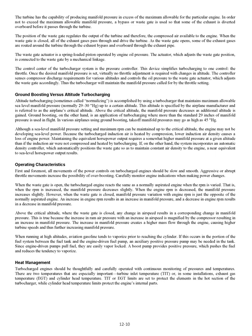Ground Boosting versus Altitude Turbocharging. Altitude turbocharging, sometimes called normalizing, maintains maximum allowable sea-level manifold pressure (normally 29 to 30 in Hg) to a certain altitude specified by the airplane manufacturer, referred to as the airplane's critical altitude. Above the critical altitude, manifold pressure decreases as additional altitude is gained. Ground boosting, on the other hand, is an application of turbocharging where more than the standard 29 inches of manifold pressure is used in flight; takeoff manifold pressures may go as high as 45 in Hg. Although a sea-level manifold pressure setting and maximum RPM can be maintained up to the critical altitude, the engine may not be developing sea-level power, because the turbocharged induction air is heated by compression, causing a loss of engine power.